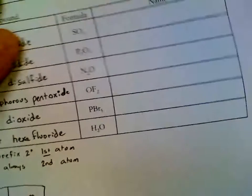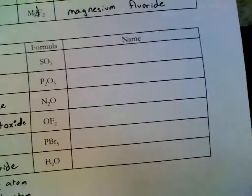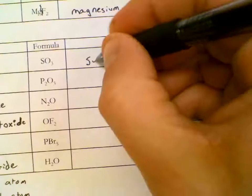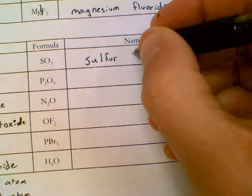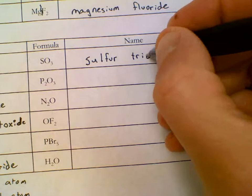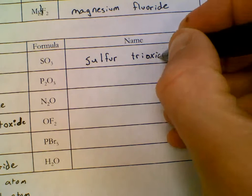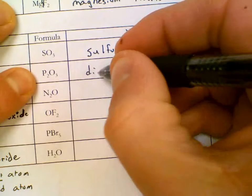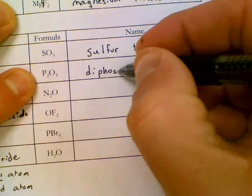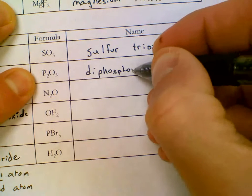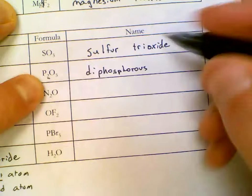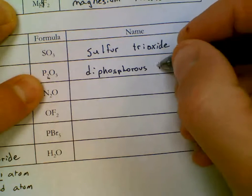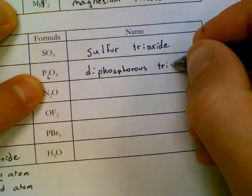On the right hand side, we have sulfur. Three is tri oxide. Phosphorus is di. And that is from the subscript two. The three is going to be tri oxide.